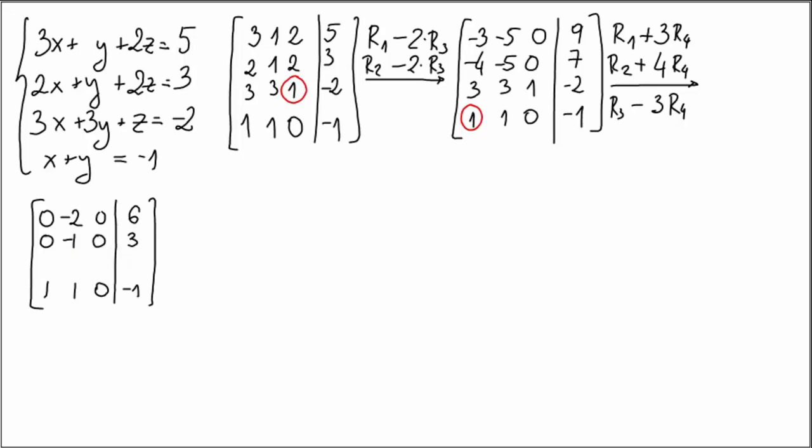And the third row: 3 minus 3 is going to be of course 0, 3 minus 3 is 0, 1 minus 0 is 0, 1. And negative 2 plus 3 gives us 1.